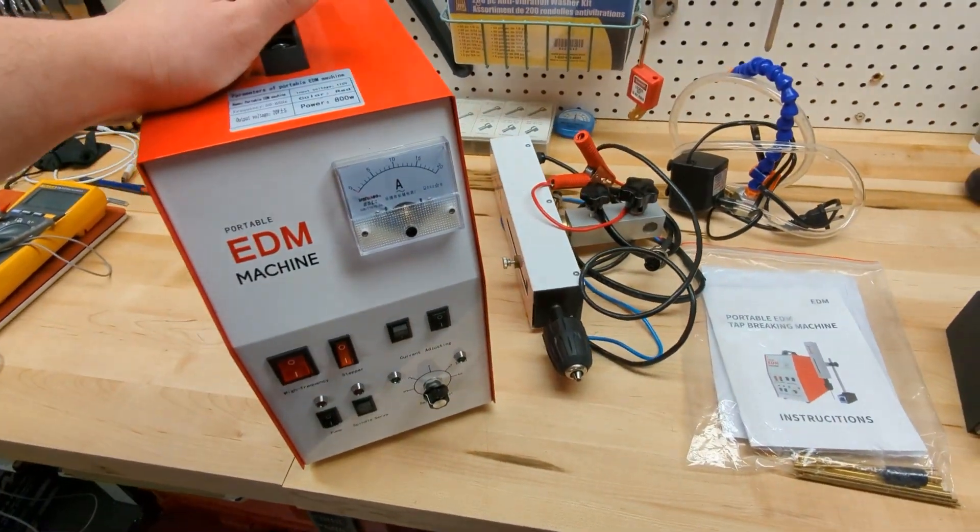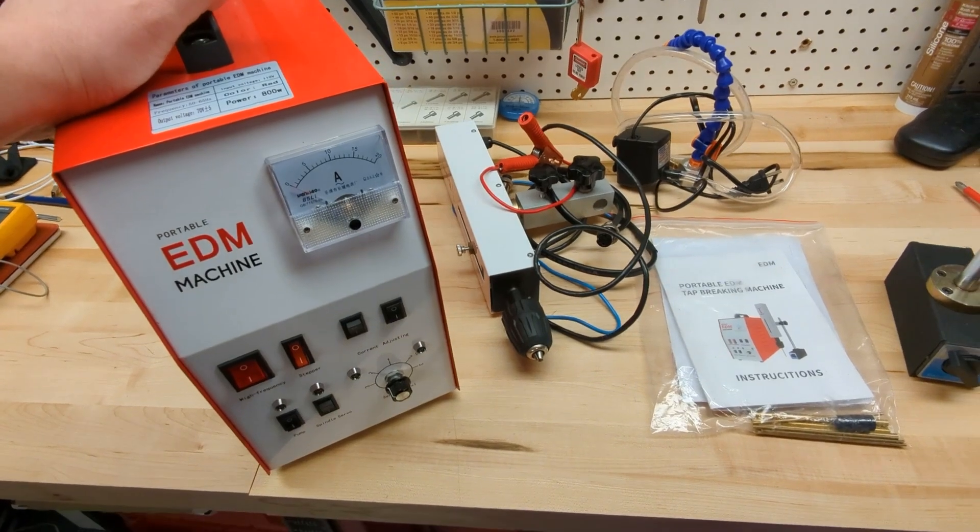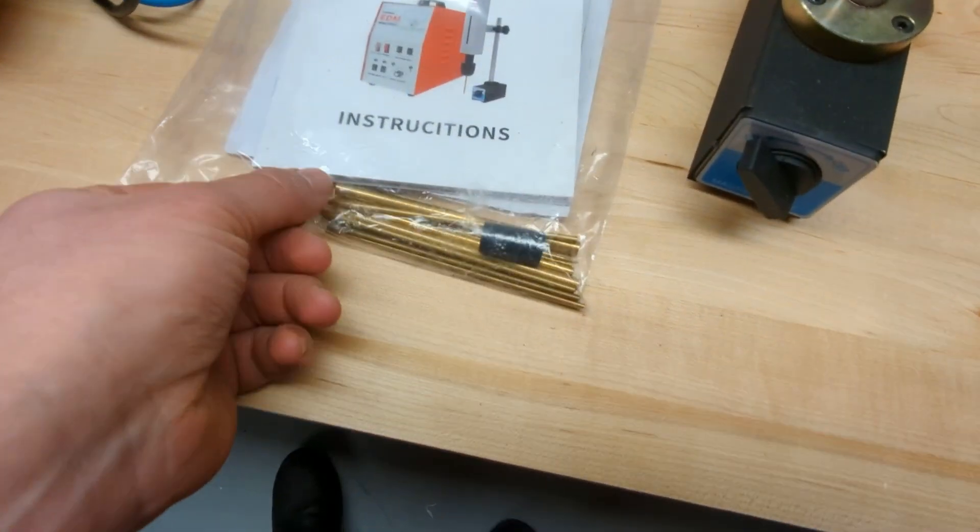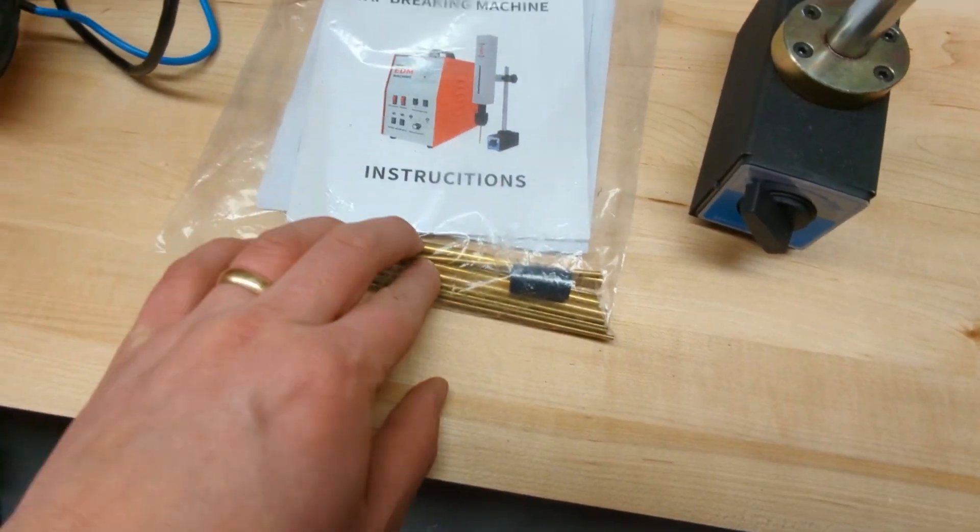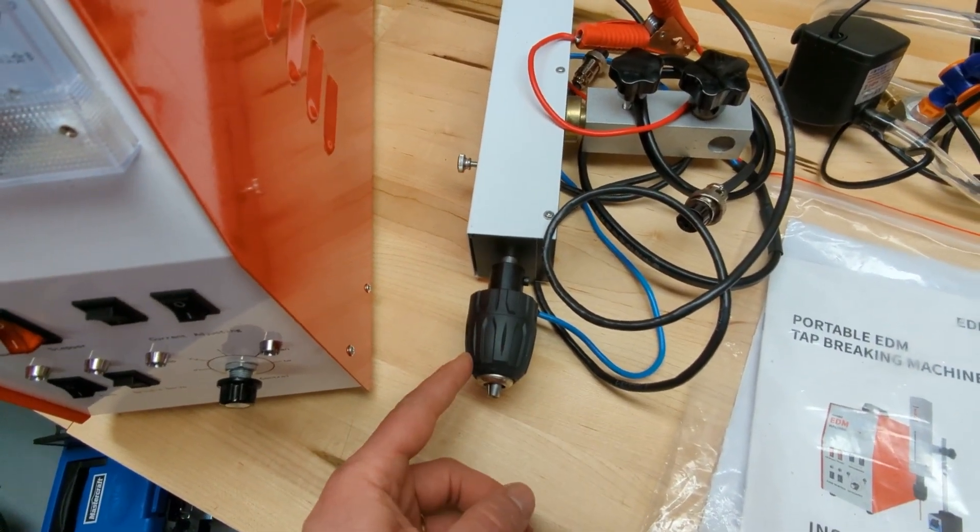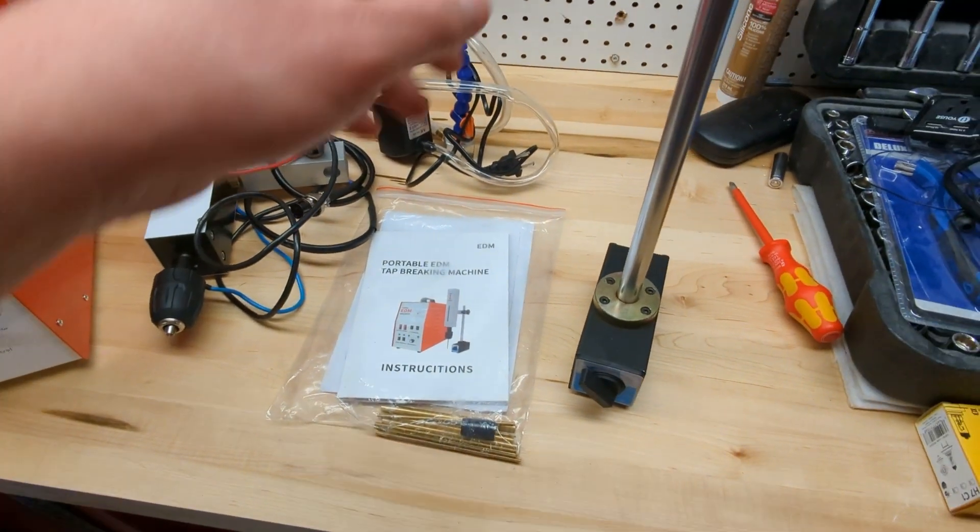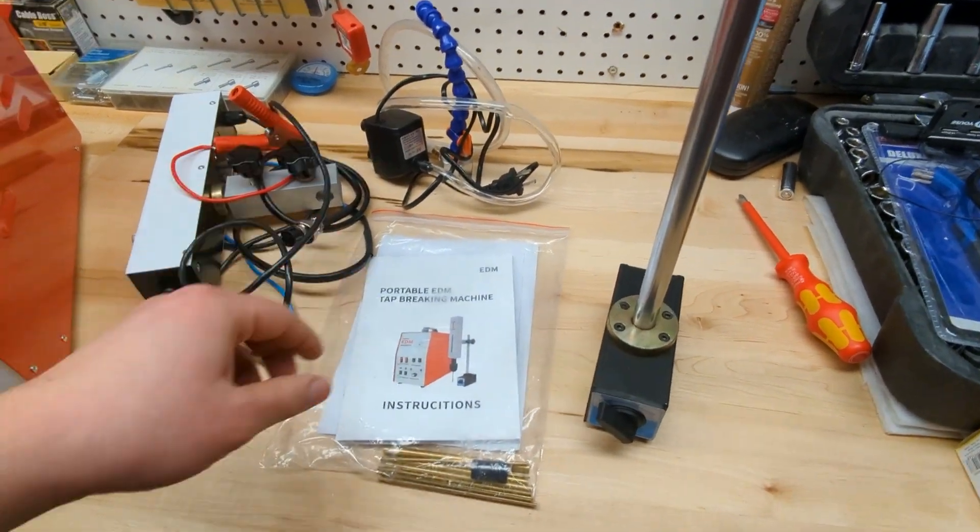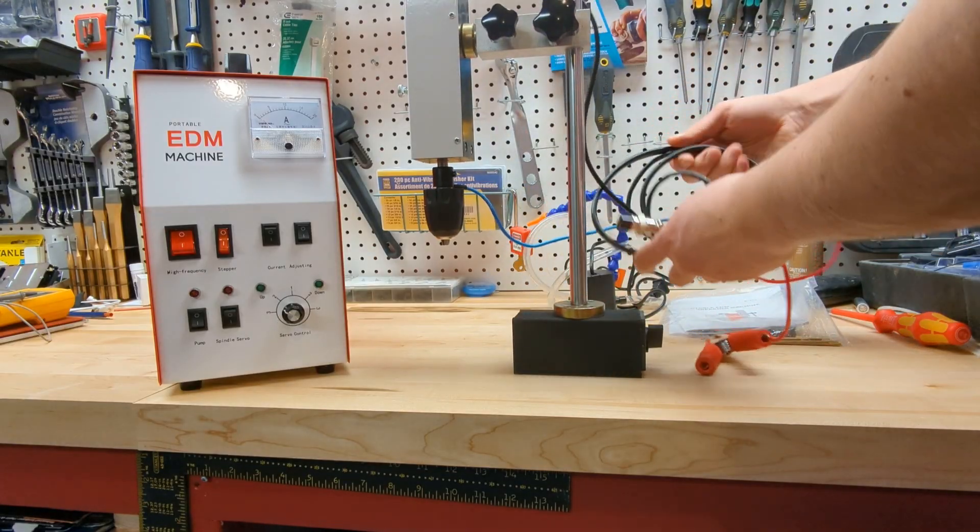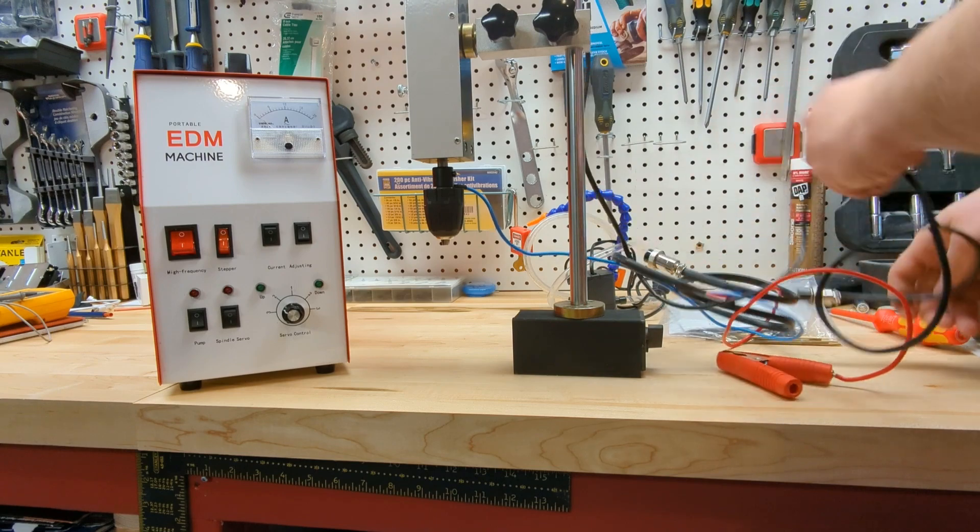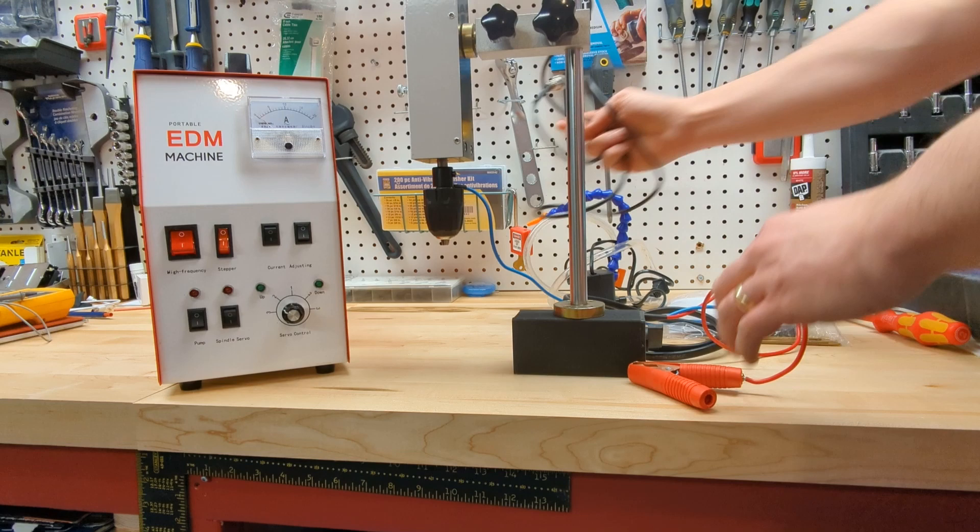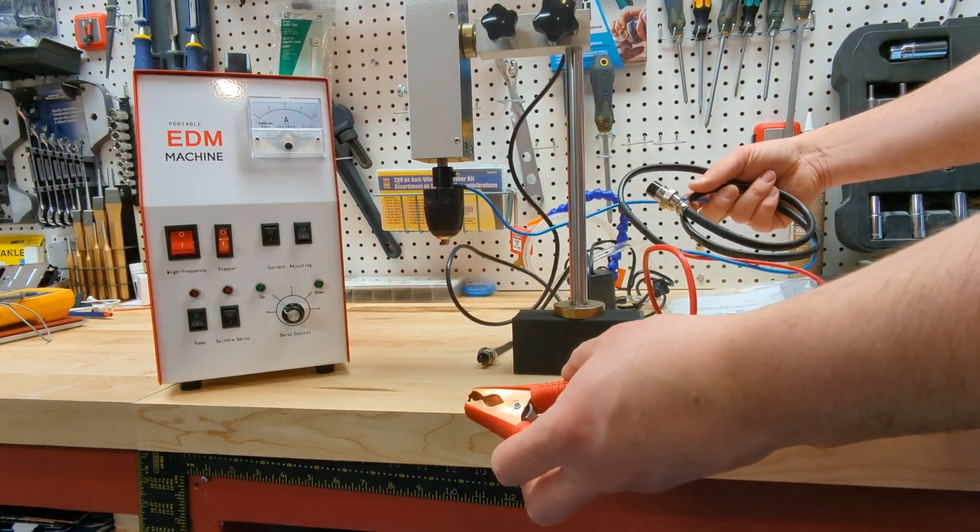Here's what the machines look like. When you put it on the bench, you have the main unit itself with a bunch of switches for setting the current. It comes with some electrodes, which are just these brass rods, as well as this drill chuck that's mounted on an electrically isolated part so that you can mount it into this magnetic holder it comes with. The servo is just a little motor.